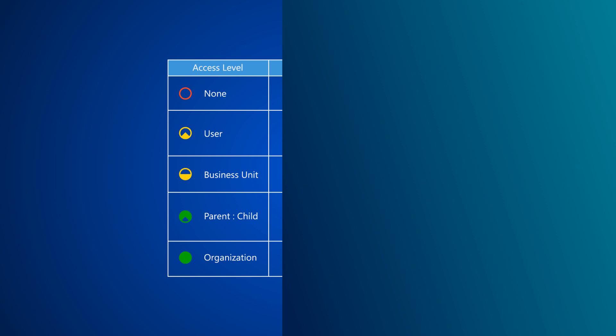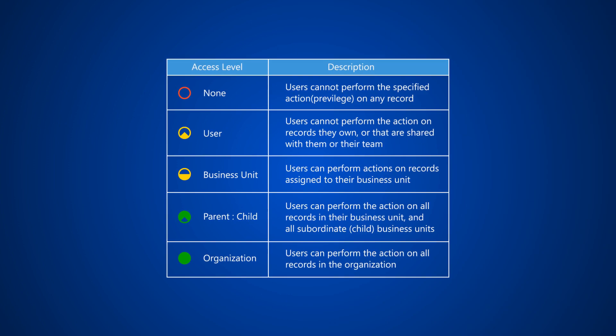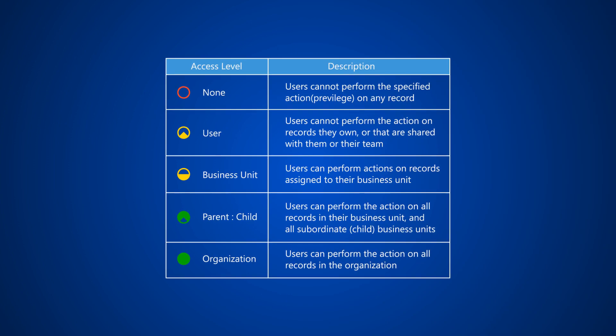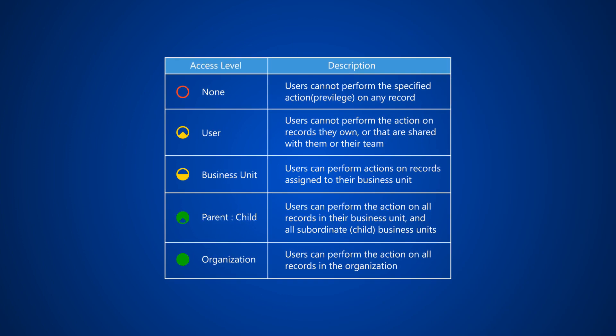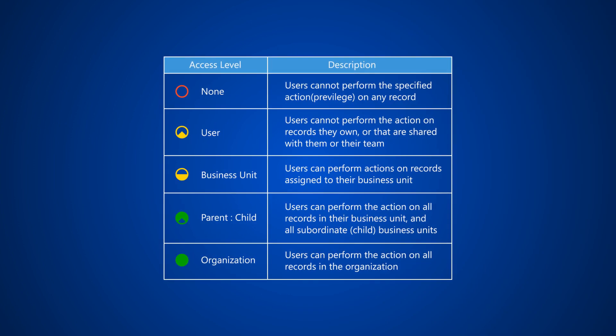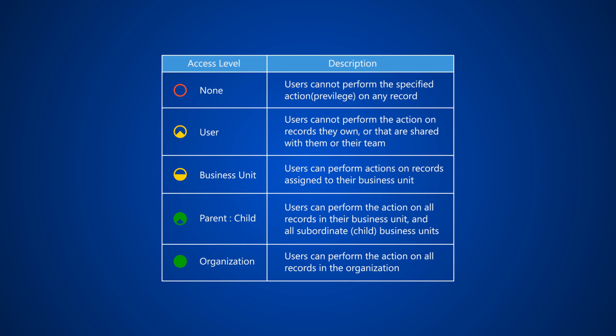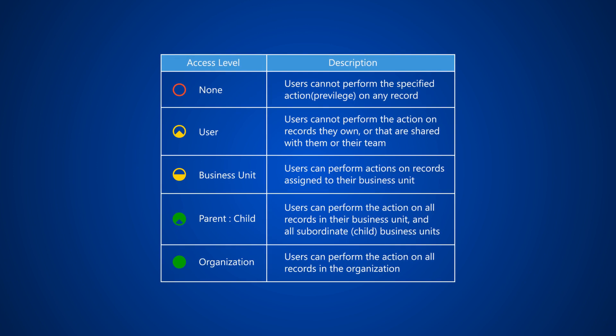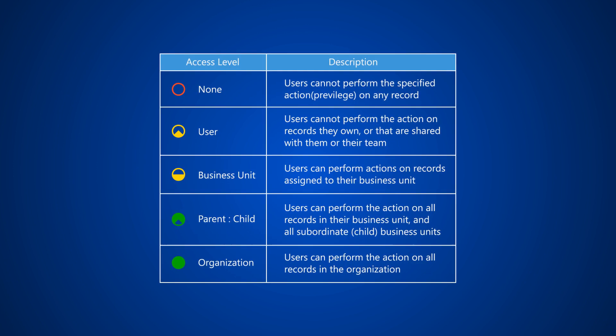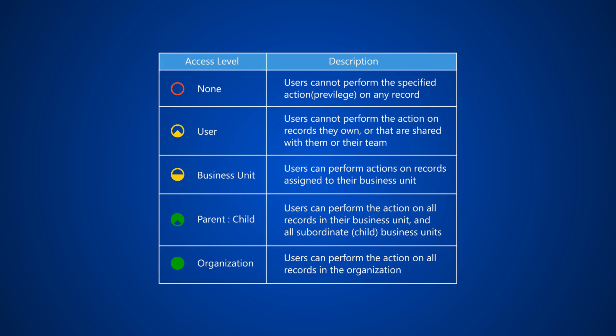Access levels determine the scope of records a user can take actions on. From most restrictive to least restrictive, these are the five access levels.